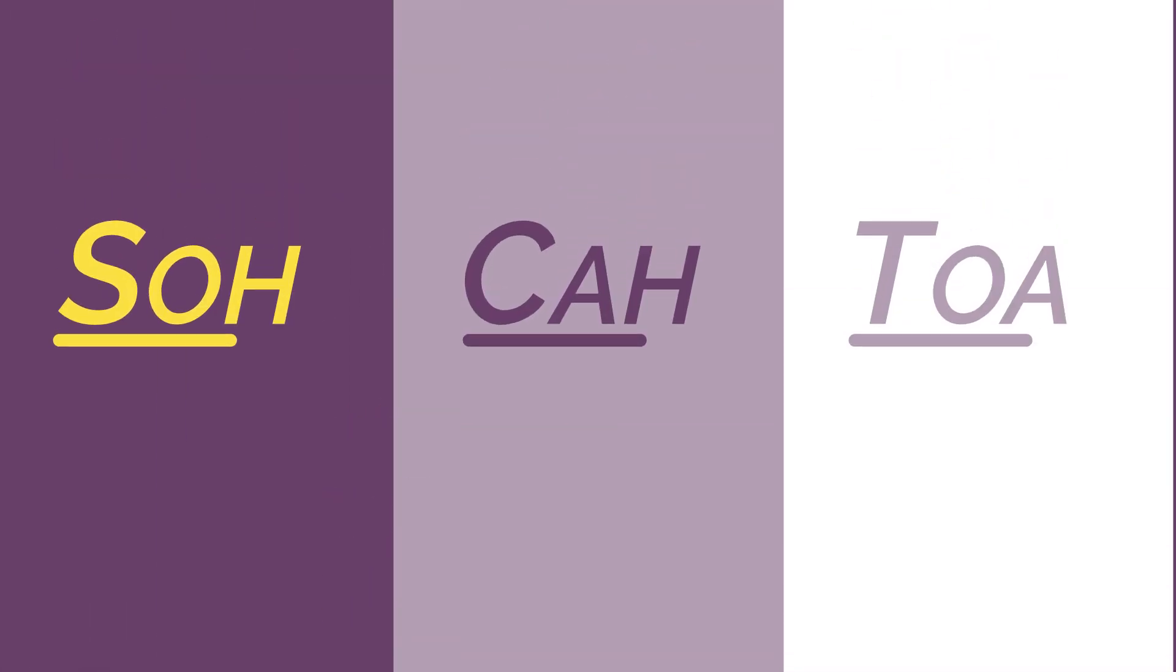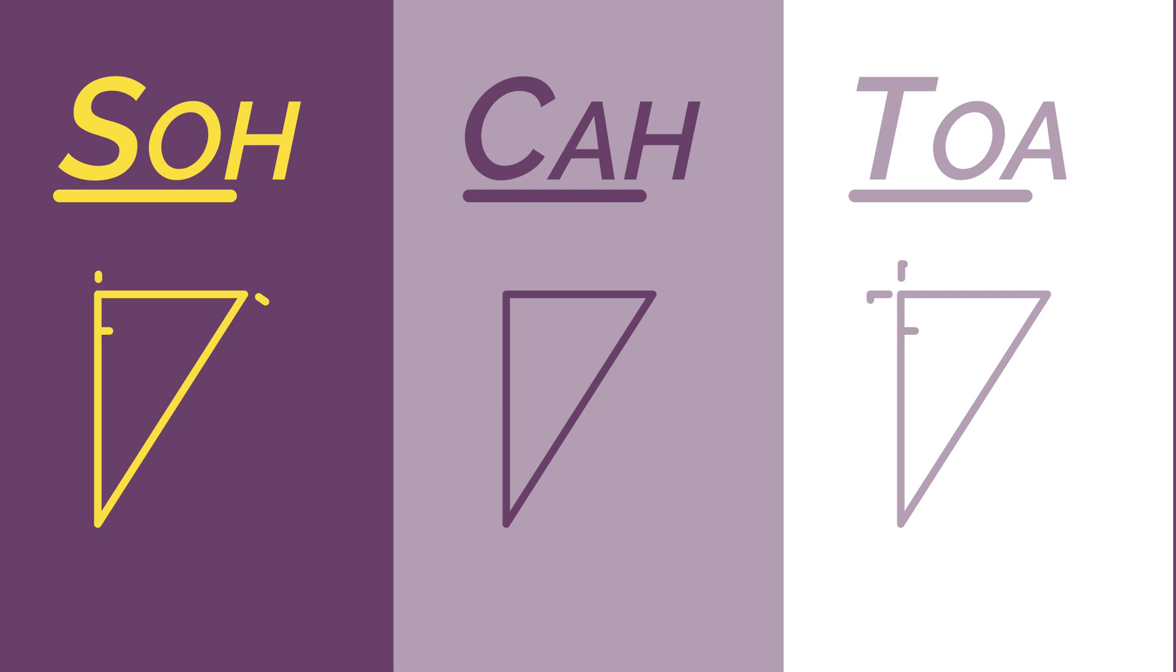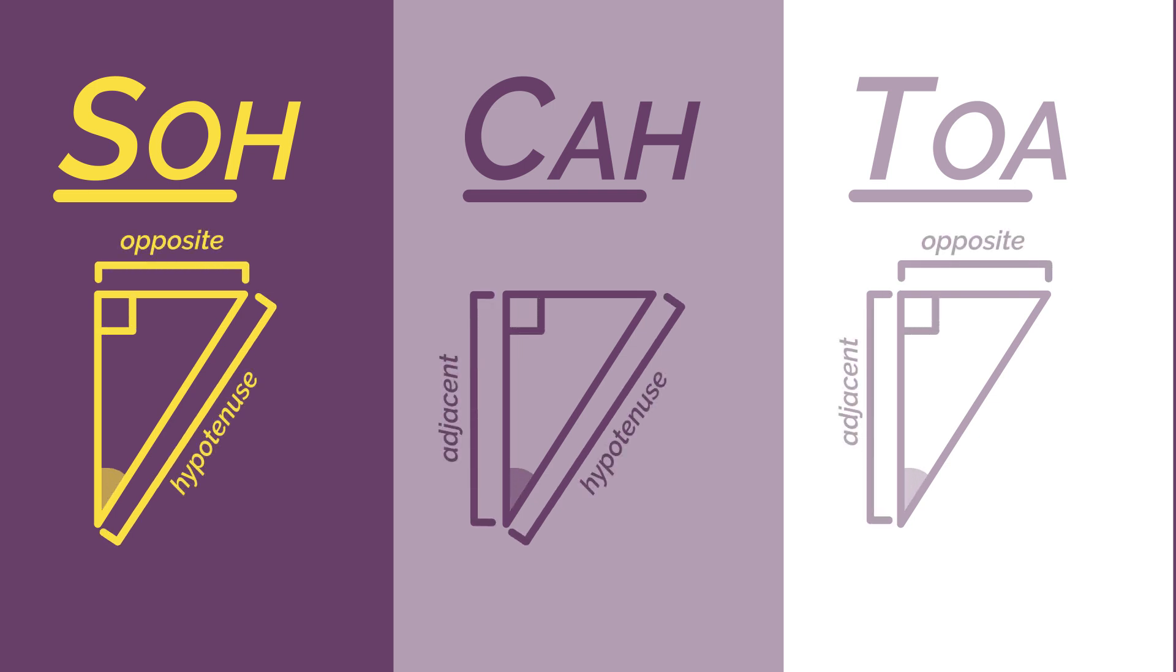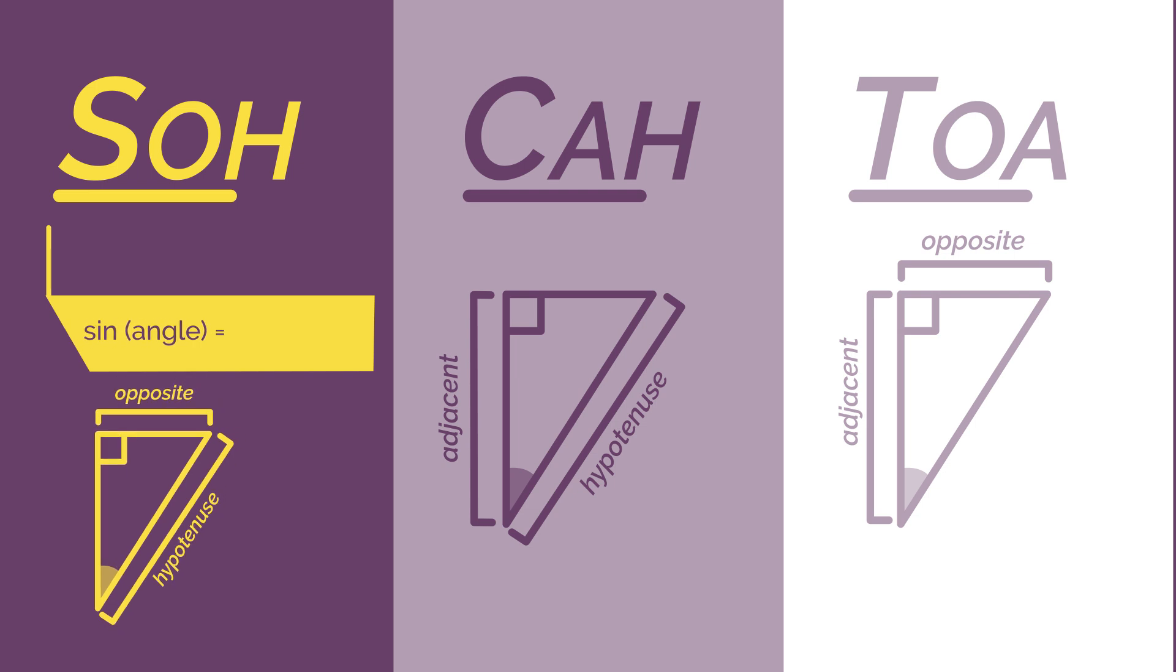So sine, cos, and tan are just ratios between sides and angles on a right angle triangle. SOHCAHTOA helps us remember which function we use to find which sides. So sine of the angle is opposite over hypotenuse, hence we say SOH.